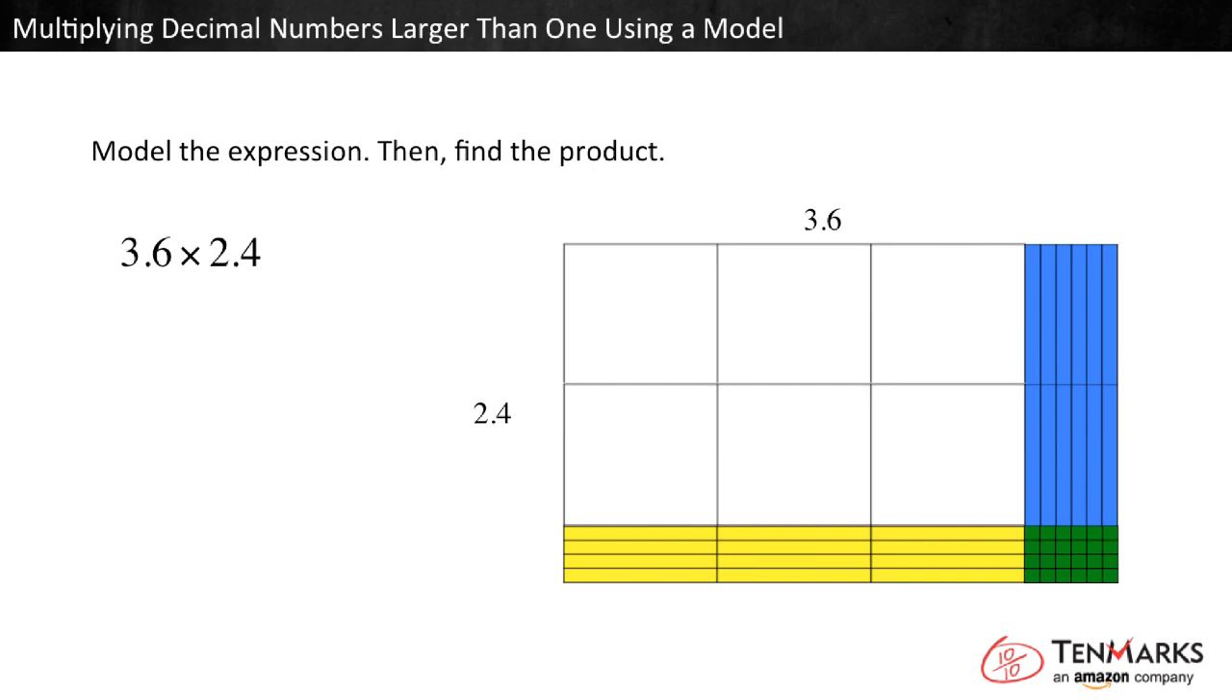Altogether, the whole model shows 3 and 6 tenths times 2 and 4 tenths. To find the product, see how many wholes, tenths, and hundredths there are in the model. There are 6 wholes, plus 12 tenths, plus 12 tenths, plus 24 hundredths.